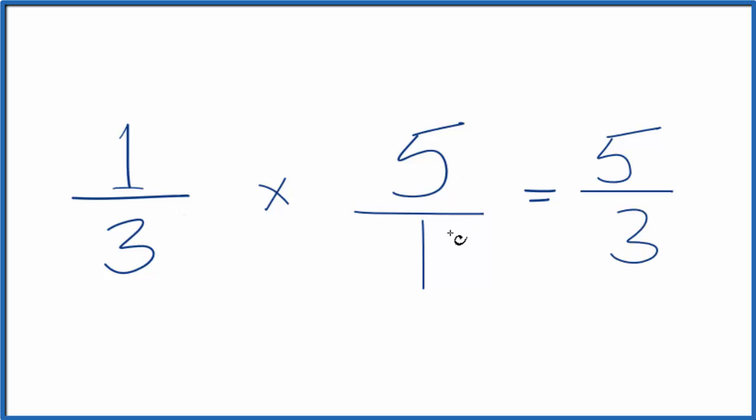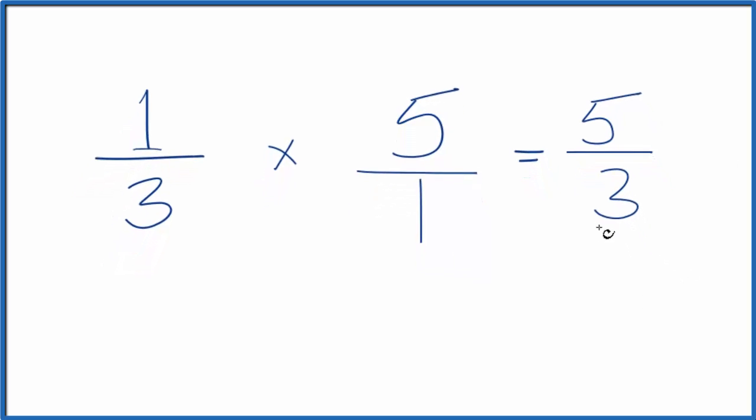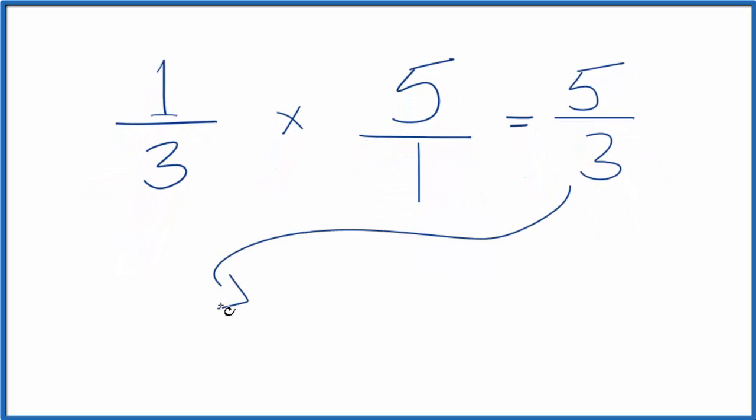So one-third of five, that's five-thirds. This is an improper fraction. Let's change this to a mixed fraction. Three goes into five one time with two left over, so we have one and two-thirds.